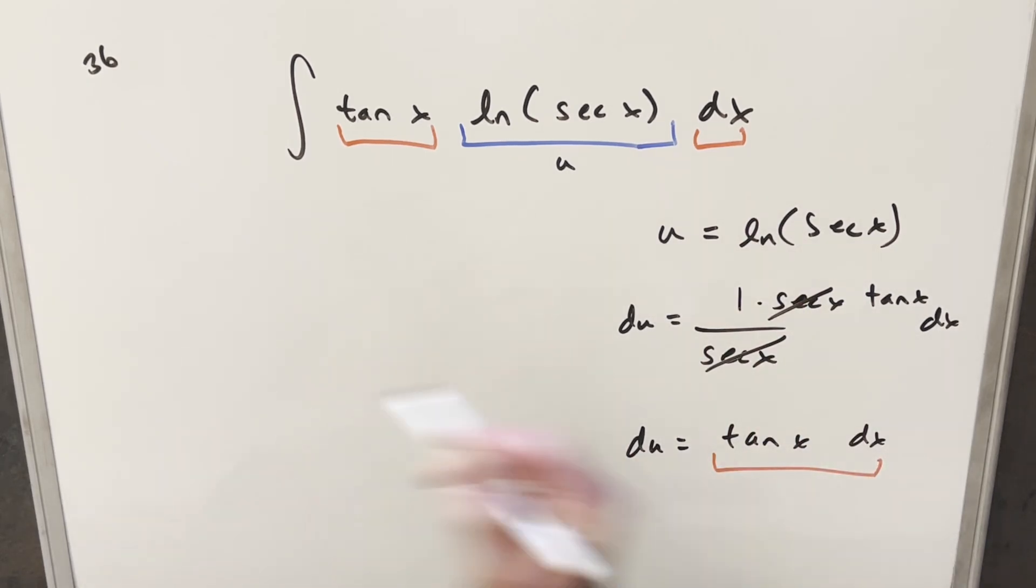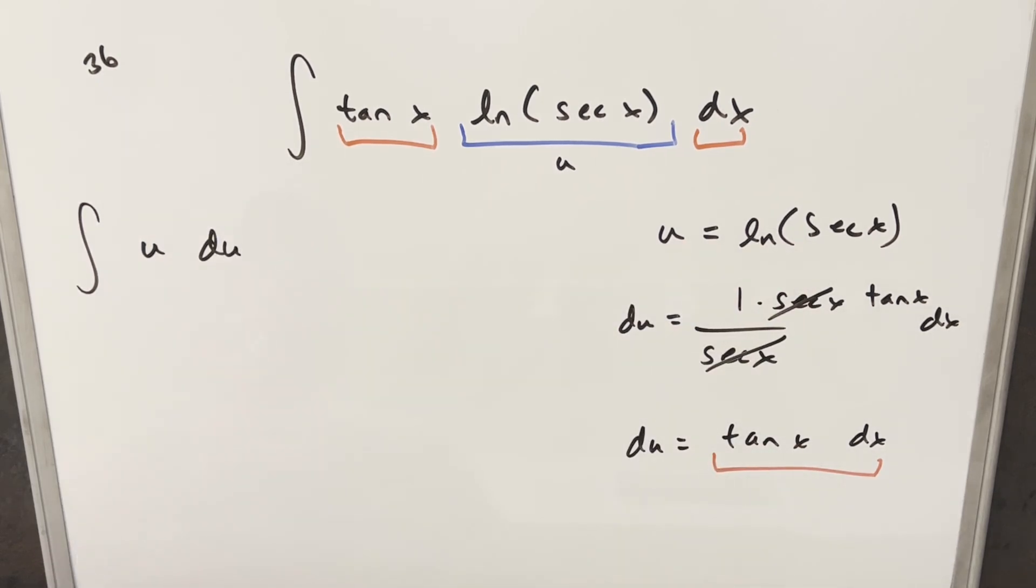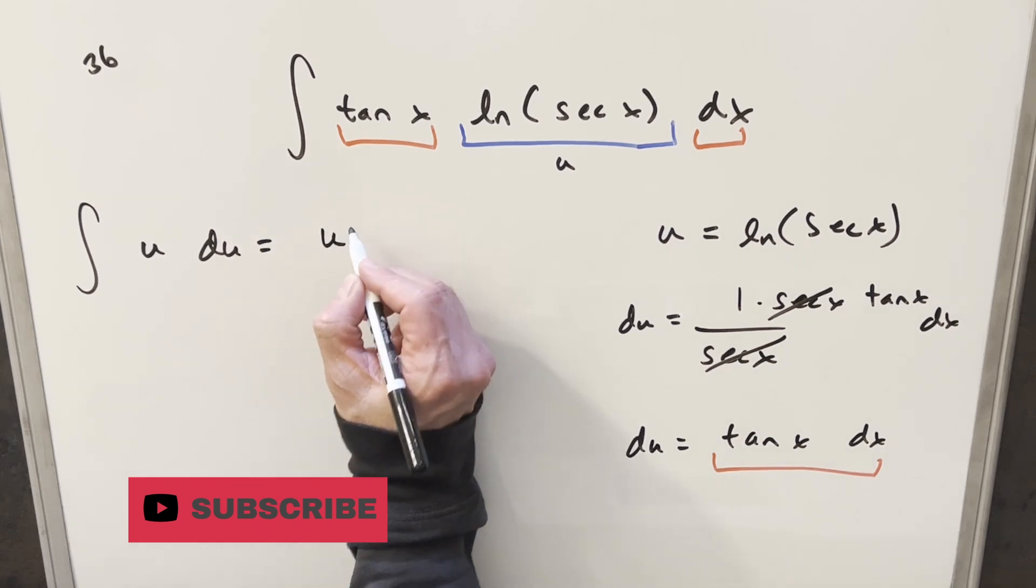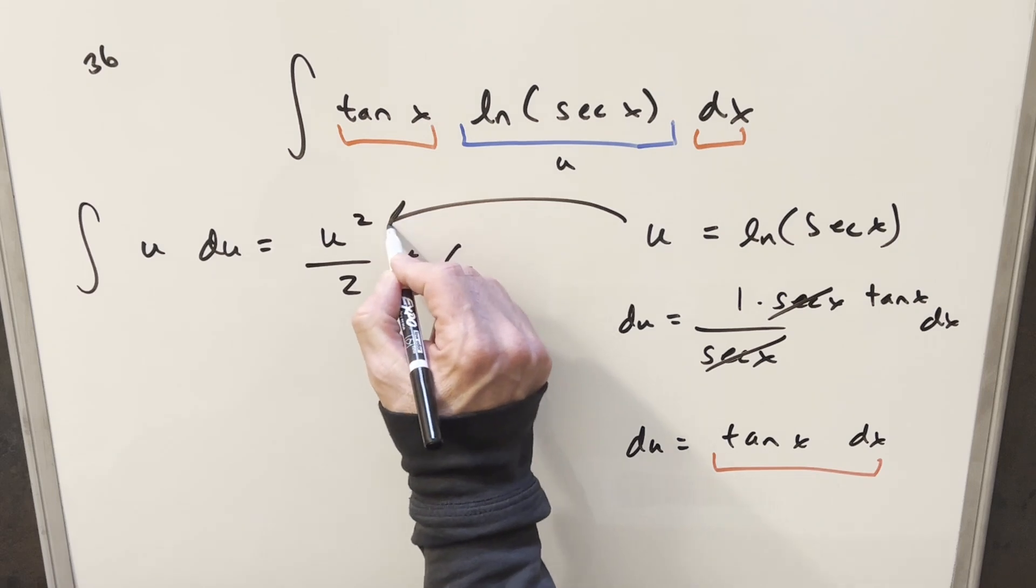So when we go ahead and rewrite this, all that we're left with is we put our u right here and everything else is just du. I'll just go ahead and use power rule on this. This is just going to become u squared over 2. But next all I need to do to finish it off is just back substitute right here.